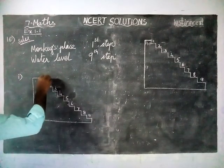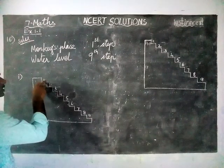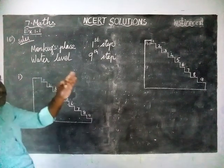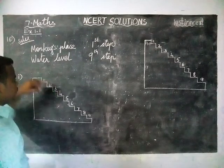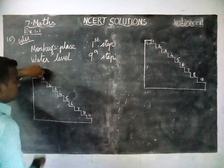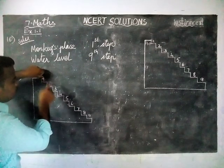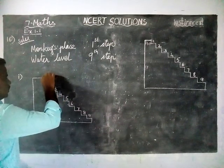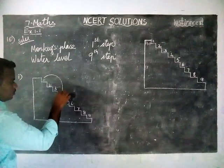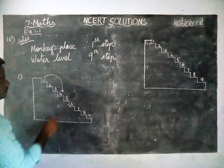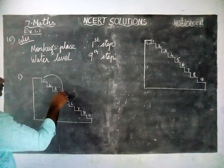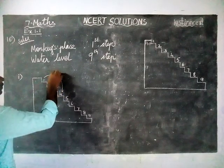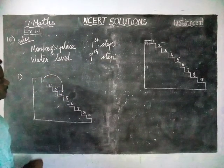Now the monkey is at the first step. From here we are going to jump three steps down — one, two, three. This is the first jump.